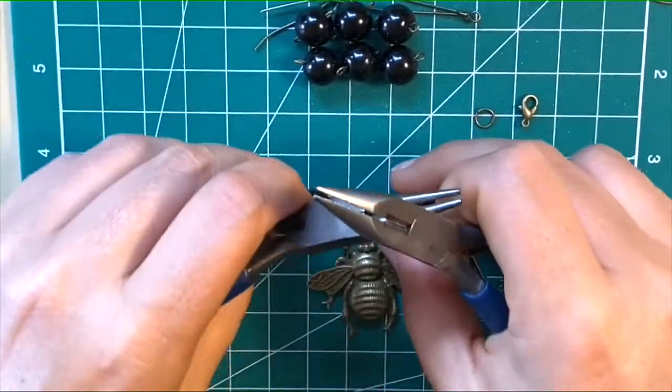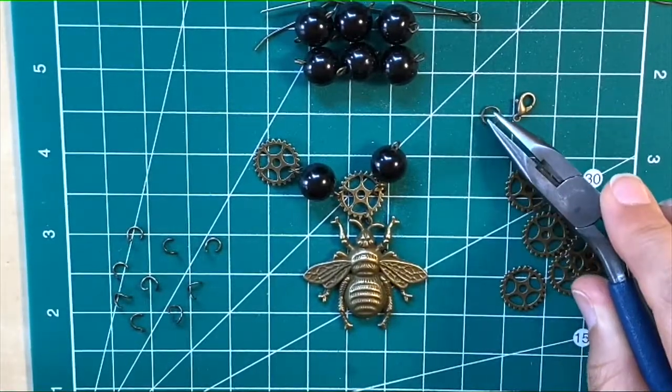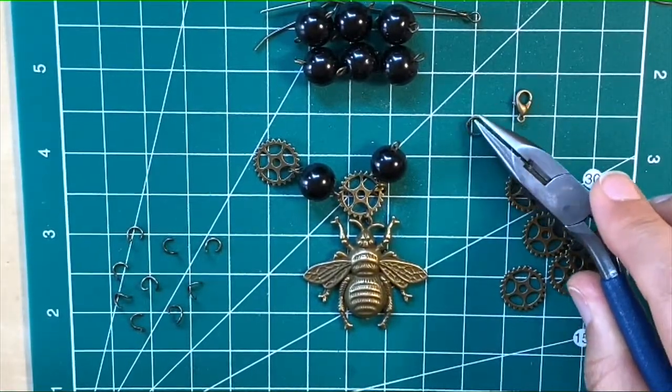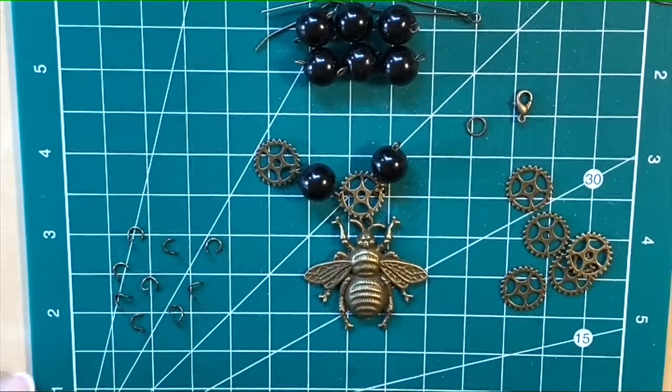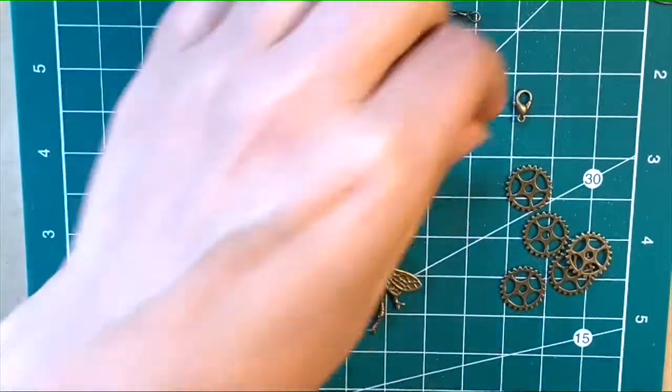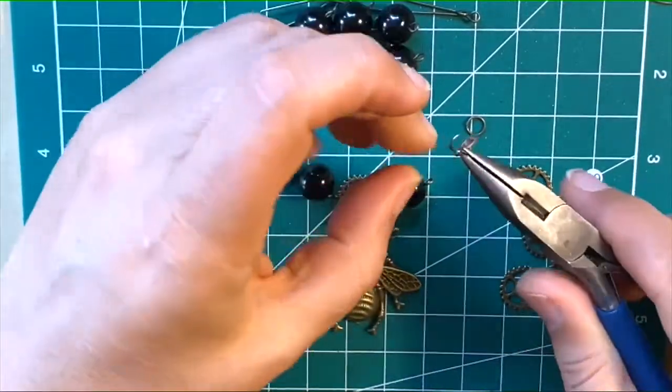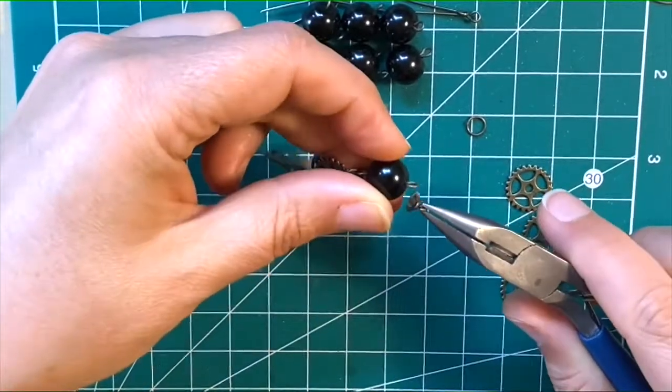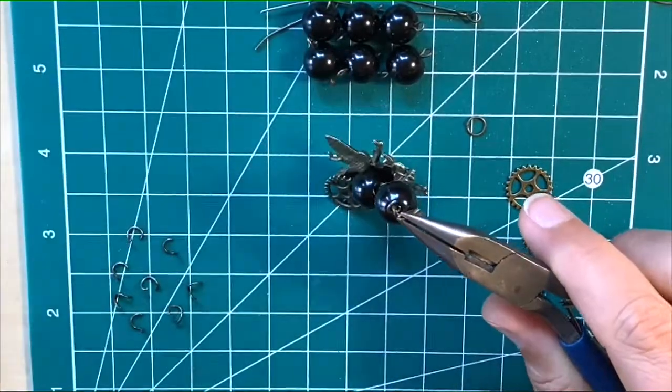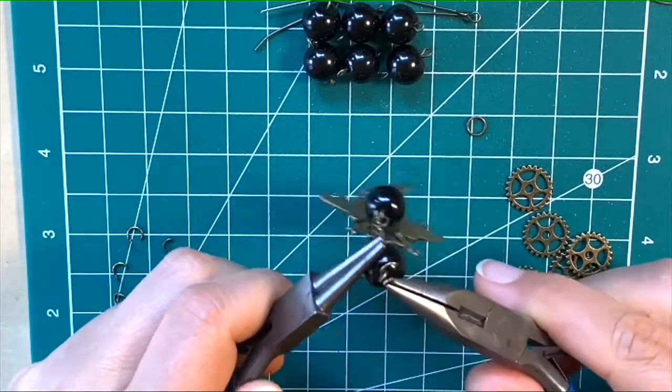Finally, the finishings. We have a lobster clasp and this loop at the end to attach to my lobster clasp. If I decide this is where I want my clasp, we're just going to put our jump ring through our lobster clasp, onto that bead, and close it up.